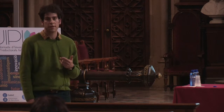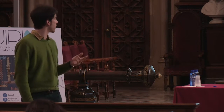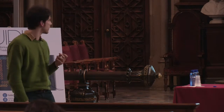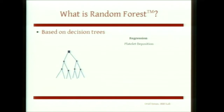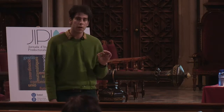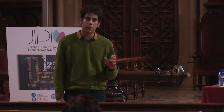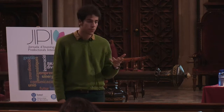My message for this talk is that a machine learning method can be as good a predictor as a physical model. I will show you how to predict with random forest the platelet deposition. Random forest is a machine learning method developed by Leo Breiman and Adele Cutler, used for prediction. When we want to predict a quantitative variable, we call that regression. It is based on decision trees — we use a lot of decision trees, that's why we call it a forest — and these decision trees are built from random subsets of our data, that's why it's called random forest. The main concept is that we use a series of inputs to build our model, train the random forest, and it gives us an output which is the prediction.